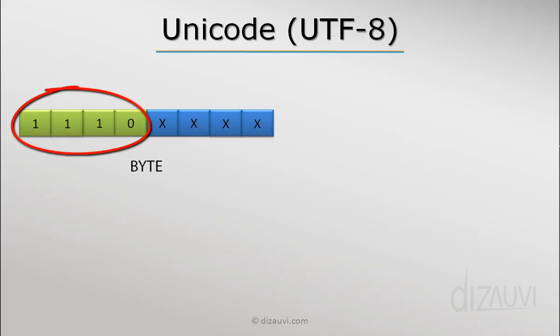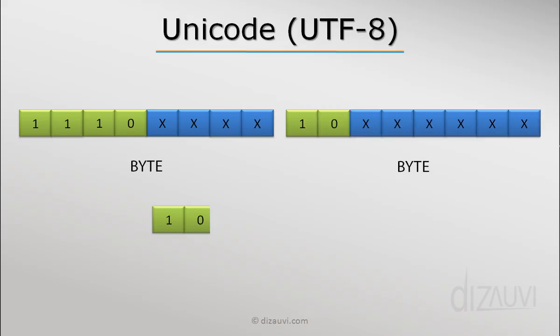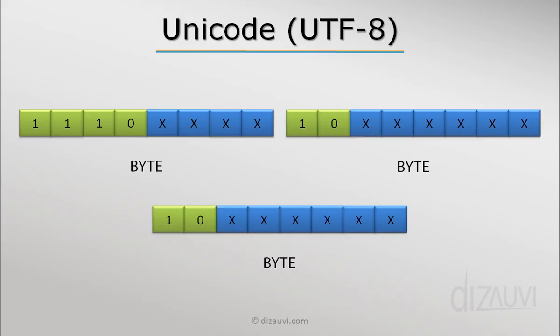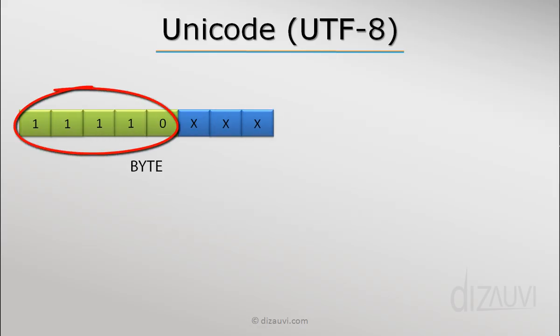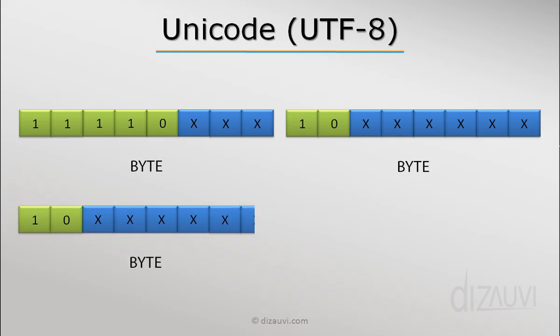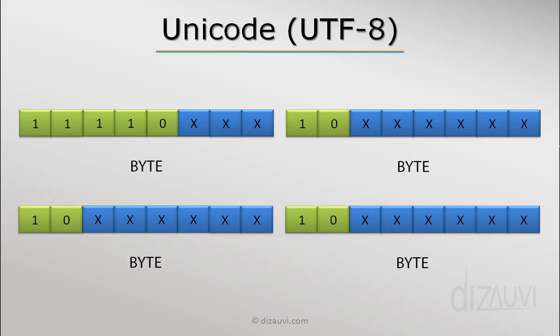If a character is encoded in three bytes, the leading byte contains three ones followed by a zero in the high-order position, followed by two continuation bytes. If four bytes are used, the leading byte starts with four ones followed by a zero, then three continuation bytes follow. The crosses in the diagram represent the actual code point data.